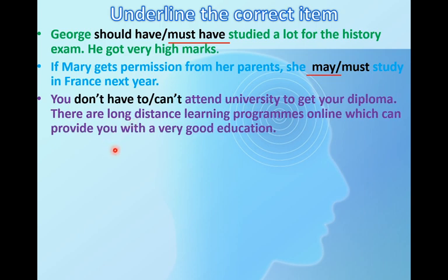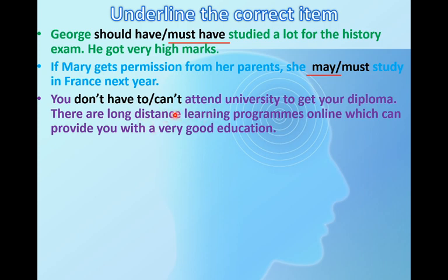You don't have to or can't attend university to get your diploma — there are distance learning programs online which can provide you with a very good education. If there's an online program, you have no necessity to attend in person. So: you don't have to attend university. Can't would mean you are unable to, which changes the meaning.